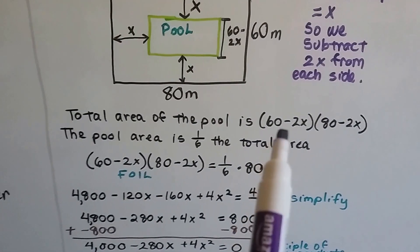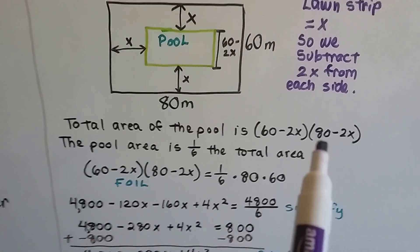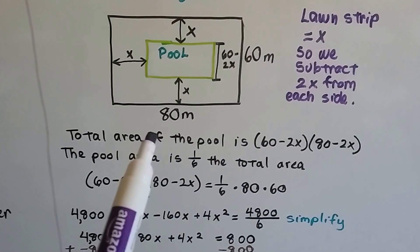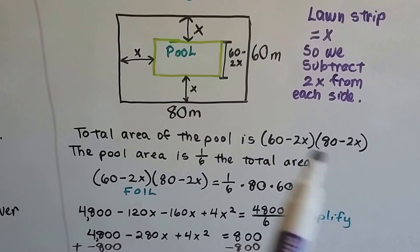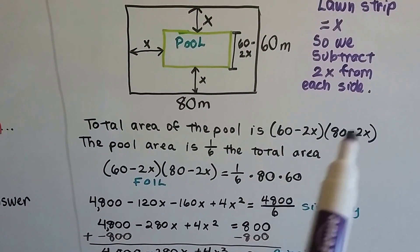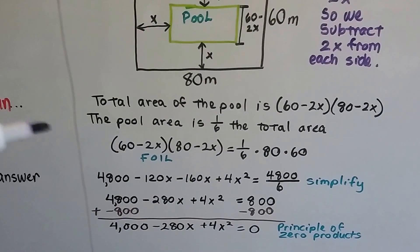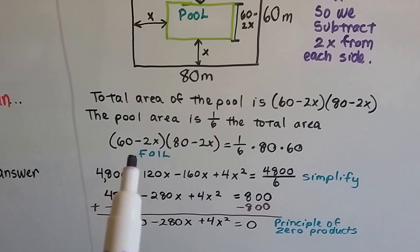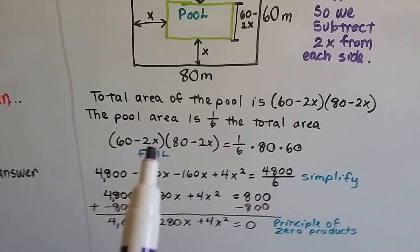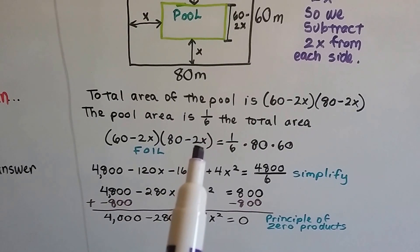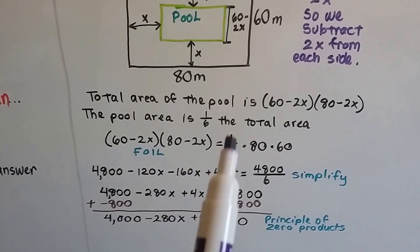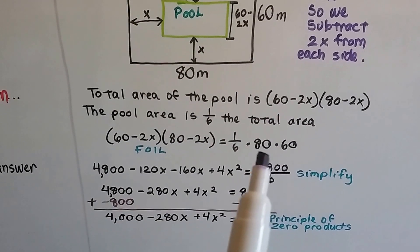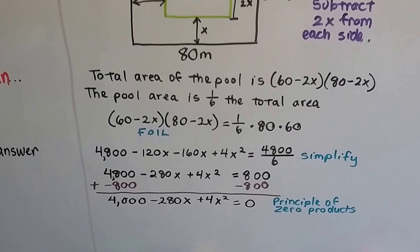The total area of the pool is 60 minus 2x times 80 minus 2x, because 60 times 80 would give us the entire area. The pool area is one-sixth of the total area, so we've got 60 minus 2x times 80 minus 2x equals one-sixth of 80 times 60.